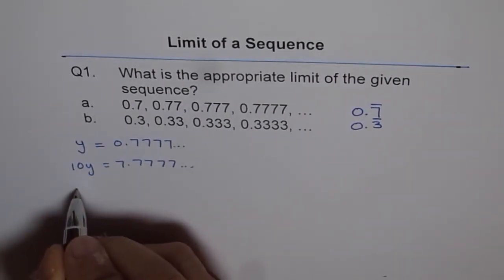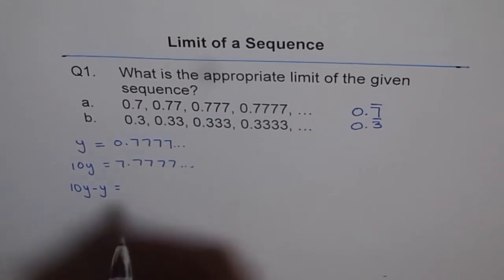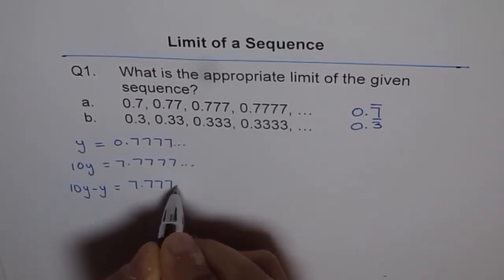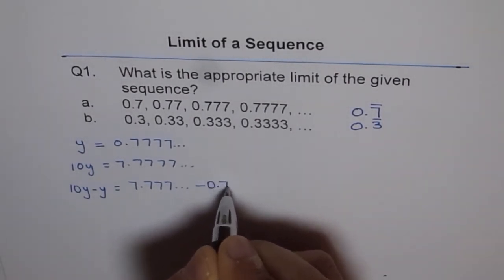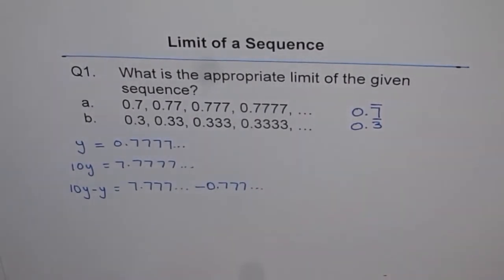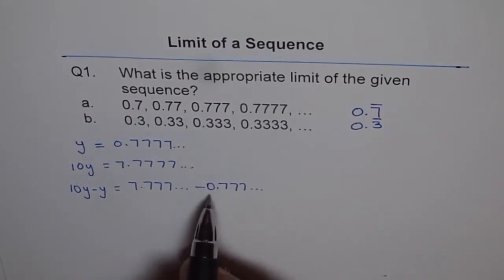How about if we take away y from 10y? That means 10y minus y equals 7.7777 and so on, take away 0.7777 and so on. So what do we get? We get just the number 7.